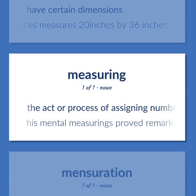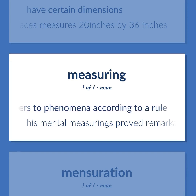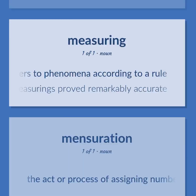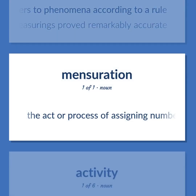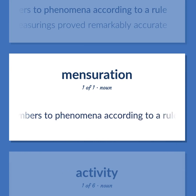Measurement: the act or process of assigning numbers to phenomena according to a rule. Example: 'His mental measurings proved remarkably accurate.'